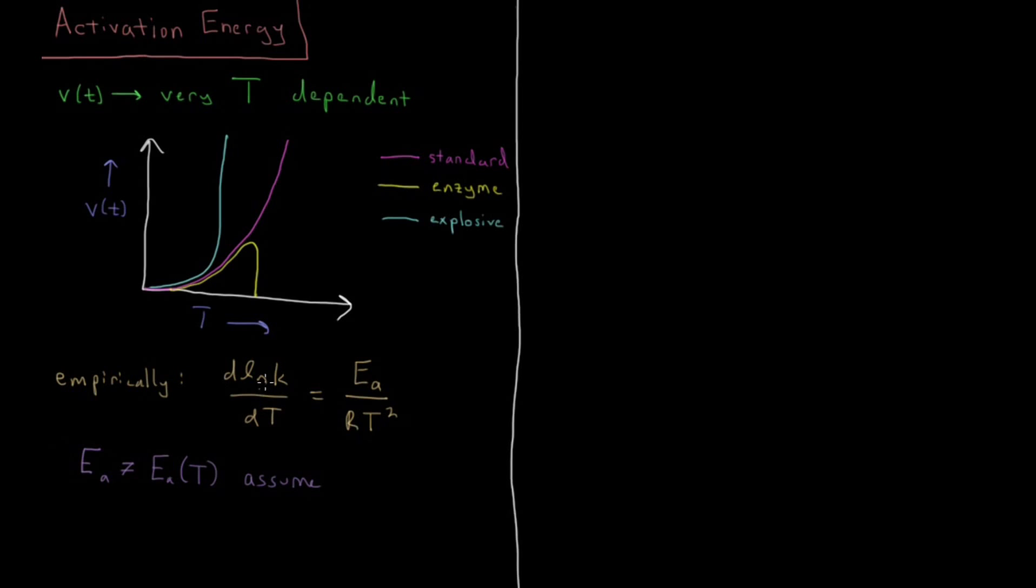So if you assume that, then you can integrate this equation and you can get the following formula. You have that the natural log of K is equal to minus EA over RT. So now we can take both sides to the power of E. So we have E to the log K is K and you have E to the minus EA over RT.